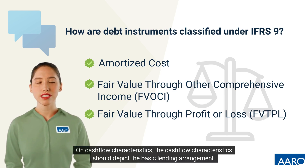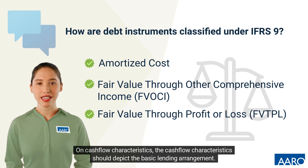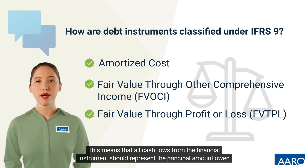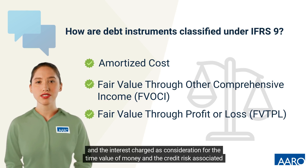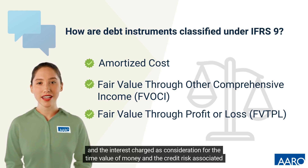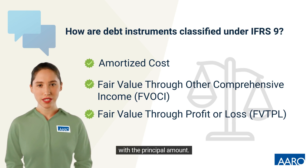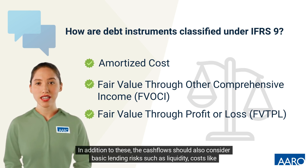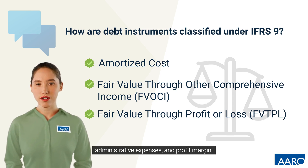On cash flow characteristics, the cash flow characteristics should depict the basic lending arrangement. This means that all cash flows from the financial instrument should represent the principal amount owed and the interest charged as consideration for the time value of money and the credit risk associated with the principal amount. In addition to these, the cash flows should also consider basic lending risks such as liquidity, costs like administrative expenses, and profit margin.